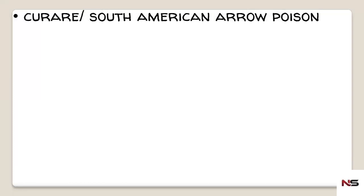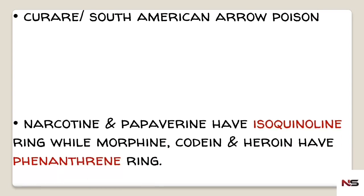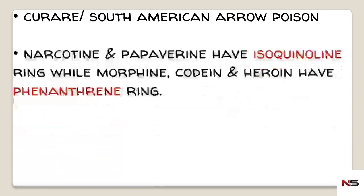Curare is also known as South American arrow poison. Narcotine and Papaverine have isoquinoline ring in their chemical structure. While Morphine, Codeine, and Heroin have phenanthrene rings.